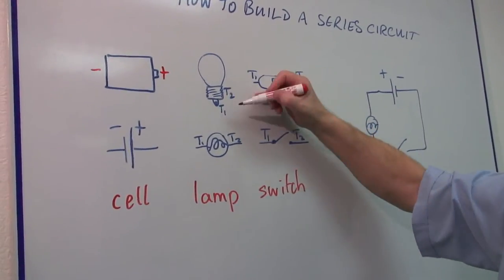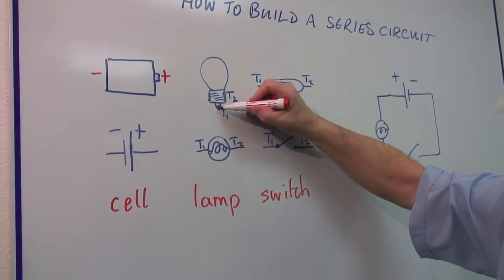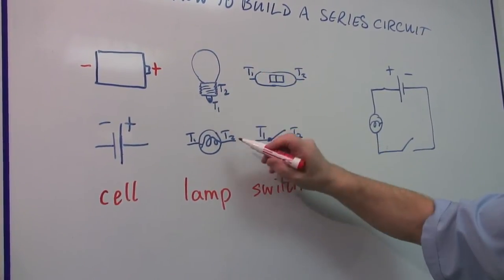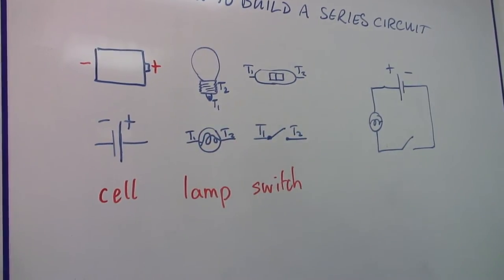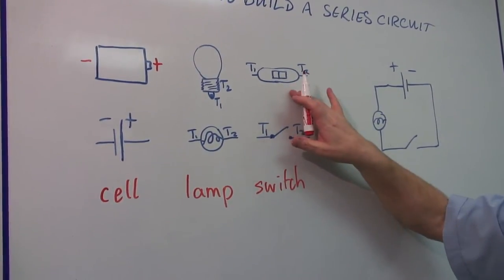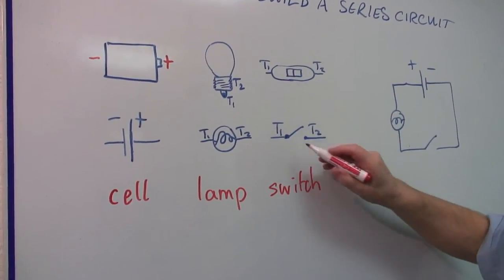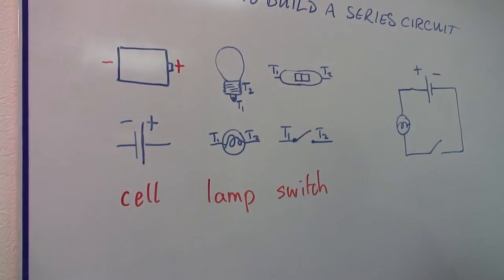On the lamp you've got a terminal at the bottom with a little pointer at the bottom, and the actual screw thread is the other terminal. So there are two terminals, terminal one and terminal two. In the switch, it's difficult to see the workings, but basically you've got two terminals, one coming out at each end, and that is represented in this way.